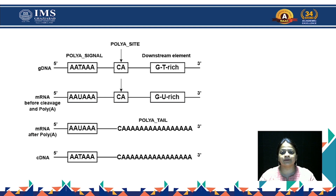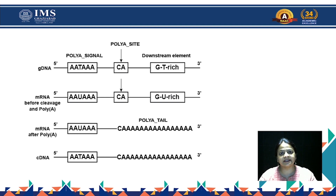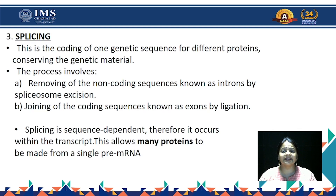In the polyadenylation process, there is a poly-A site — the CA sequence — where cleavage of the downstream GU-rich element takes place, and then there is addition of the poly-A nucleotides. The enzyme that does this is poly-A polymerase — not a DNA polymerase or RNA polymerase, but poly-A polymerase — which adds adenine nucleotides to the 3' end, making it more stable against RNases.